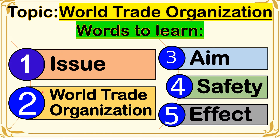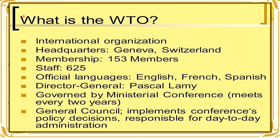The next word is World Trade Organization. What is the World Trade Organization? It is an international organization that was built in Geneva, Switzerland, and it has 153 members. There are 625 people working in the WTO and its official languages are English, French, and Spanish. The Director General of WTO is Pascal Lamy and they meet every two years.